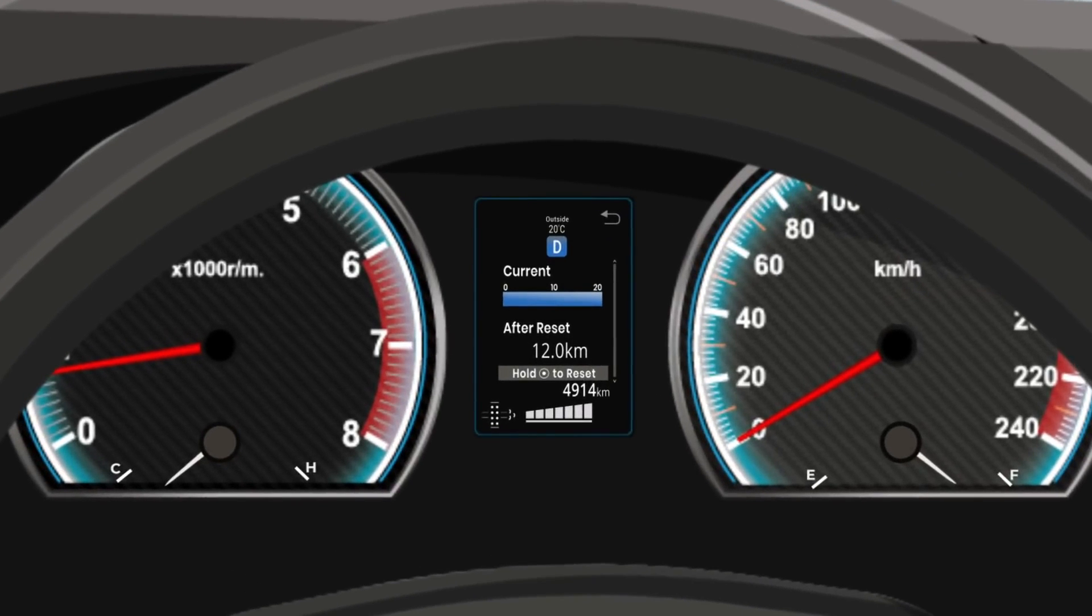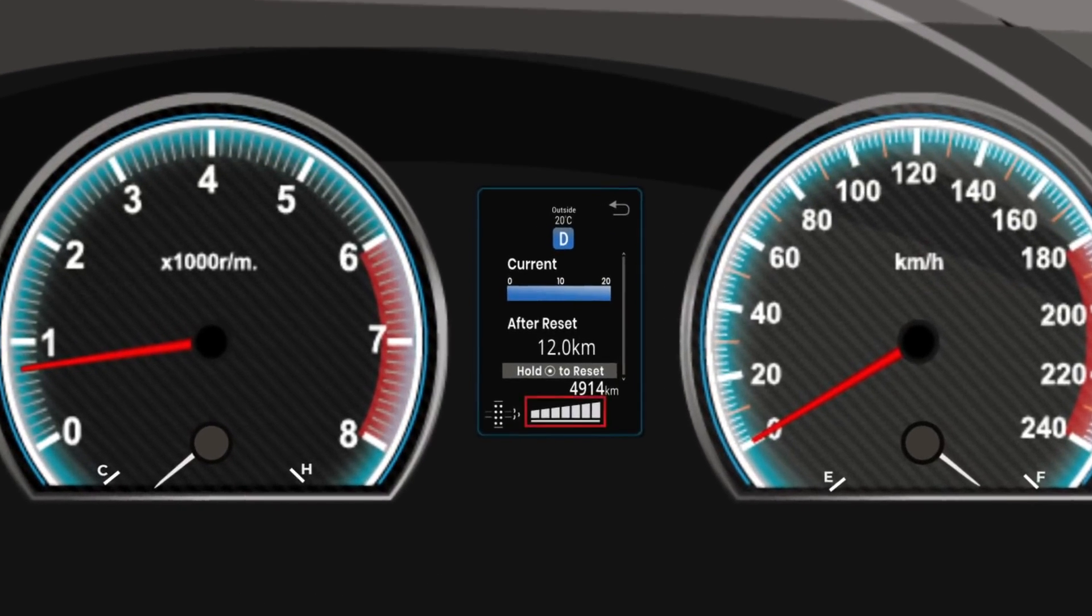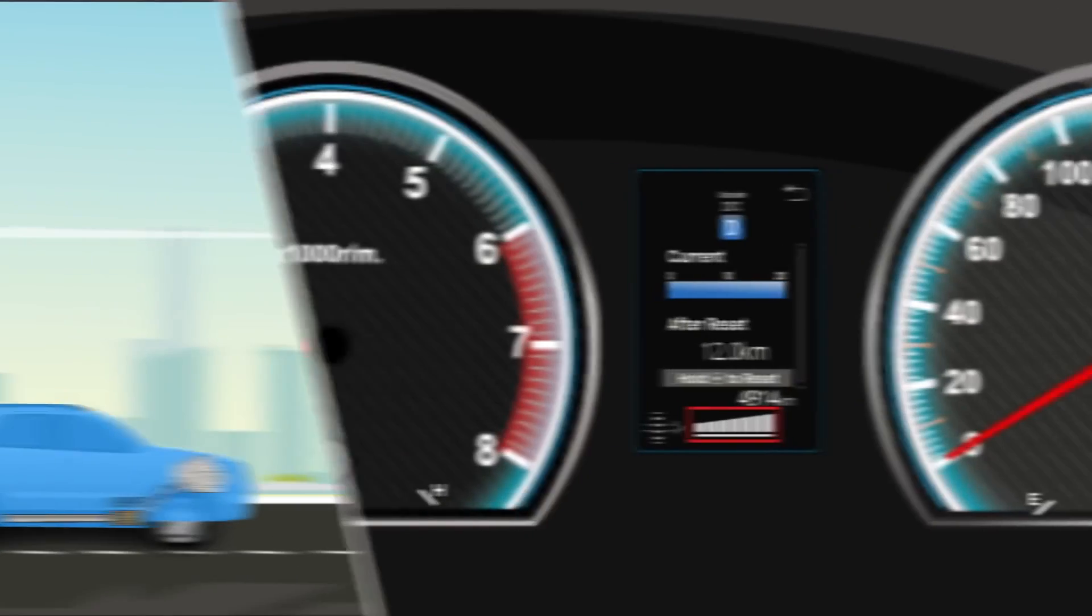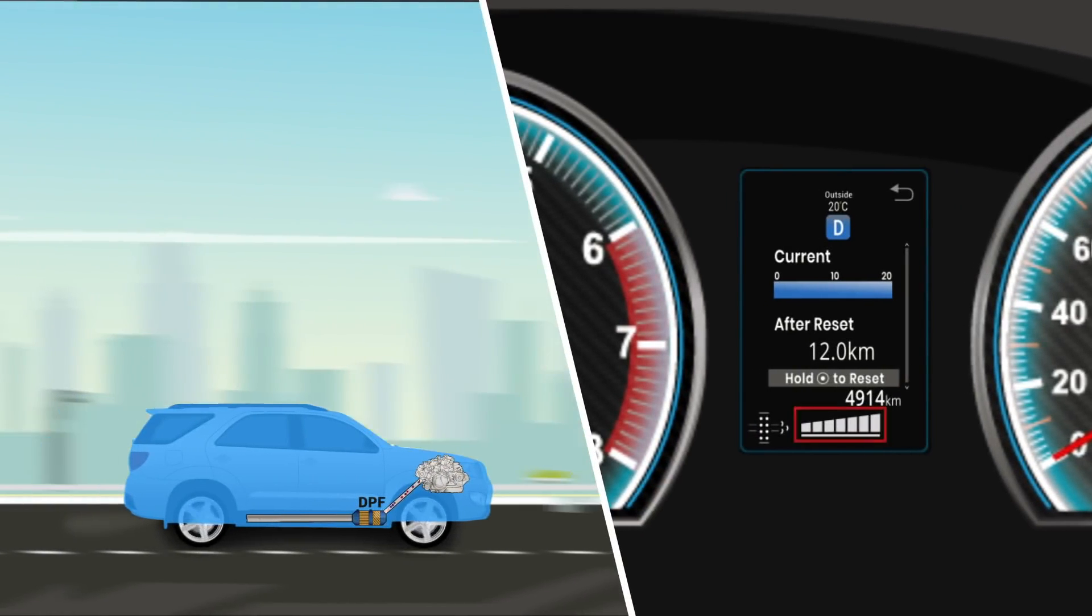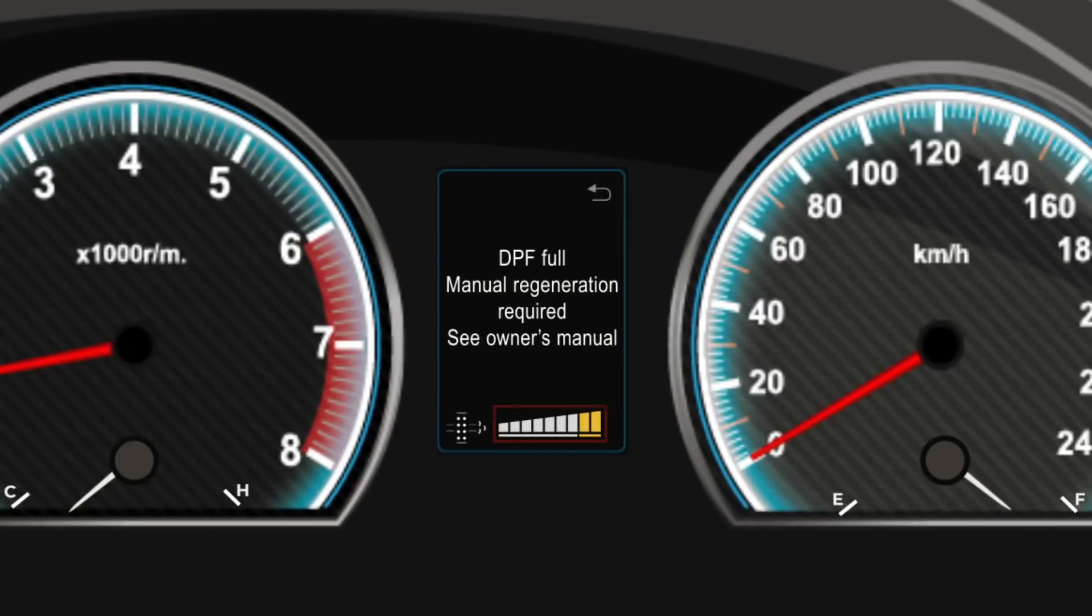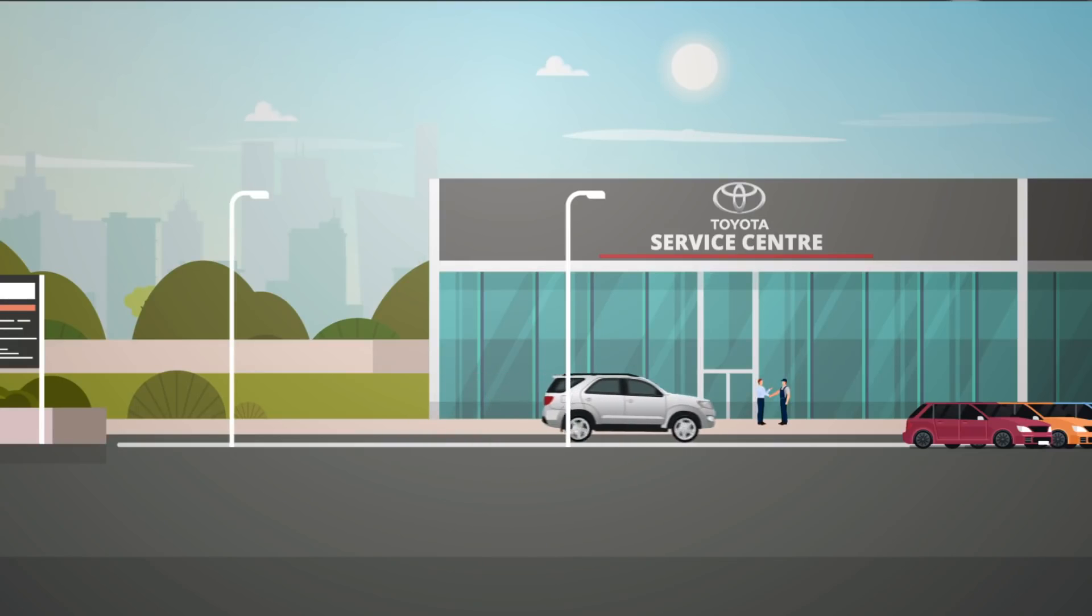If the number of lines displayed is less than 6, the system tries to auto regenerate when the required conditions are met. If the number of lines displayed is between 7 and 9, manual regeneration might be required. If all 10 lines are highlighted, have your car immediately inspected at the nearest Toyota dealer.